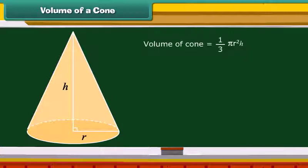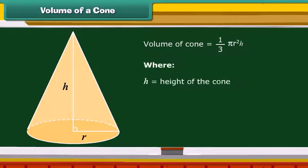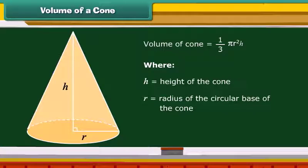Volume of a cone is simply given by 1 by 3 pi R square H, where H is equal to height of the cone and R is equal to radius of the circular base of the cone.